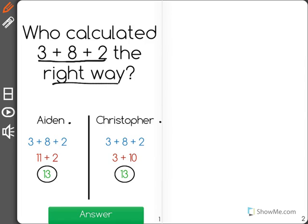Aiden has 3 plus 8 plus 2, and he solved 3 plus 8 first to get 11, plus 2, which is 13.